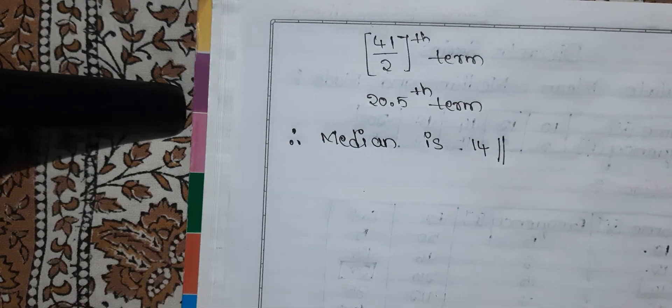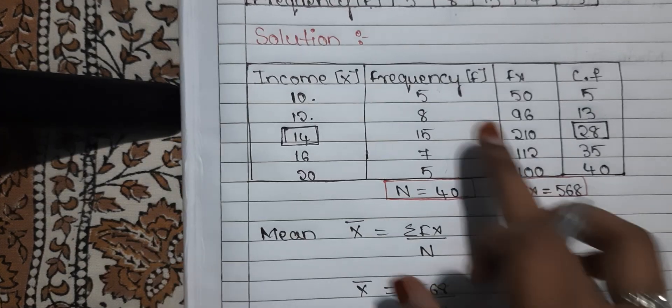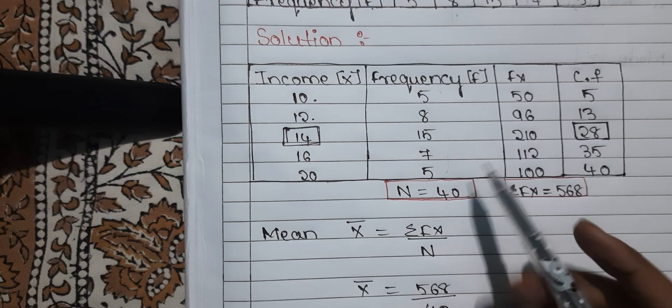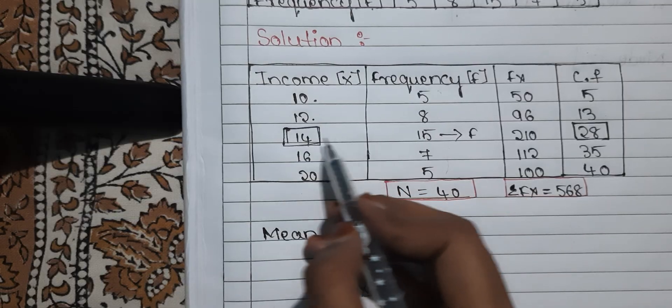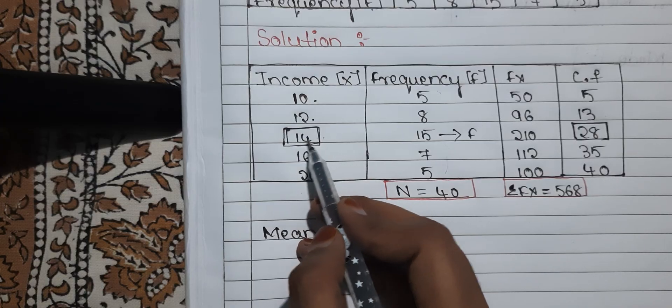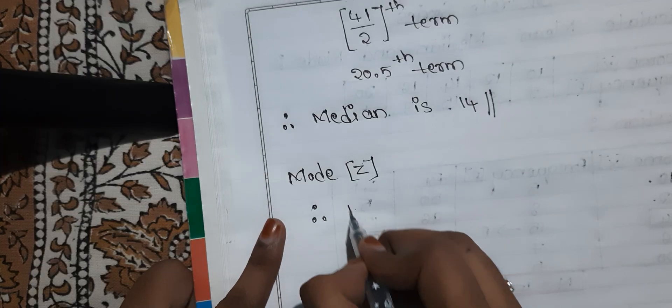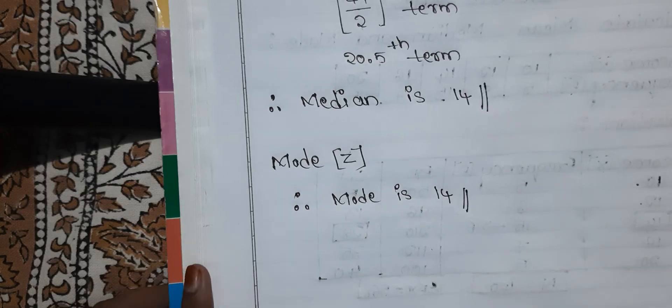Mode is also known as Z. Mode is nothing but the highest frequency. Looking at the frequencies — 5, 8, 15, 7, 5 — the highest frequency is 15. The X value corresponding to this frequency is 14. So 14 is our mode. Therefore, mode is 14.